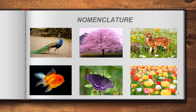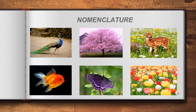Below the nomenclature title, I have displayed a few figures — peacock, cherry blossom, deer, goldfish, butterfly, and tulip flower. We have identified each organism with its own name, differentiating them from one another. Giving a particular name to an organism is called nomenclature. Nomenclature is a Latin term that denotes naming.